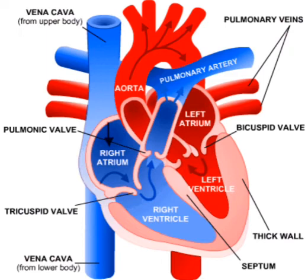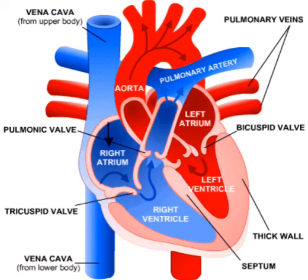We will discuss the mechanism of circulation — how blood circulation takes place — in the next video lecture. Before that, we need to understand each chamber of the heart and each pathway in detail, after which we can understand the circulation of blood in the human body. Your homework will be to draw the diagram of the human heart in your copy, as the diagram is very important.